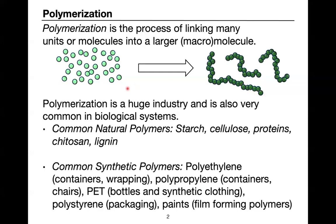We take lots of small units and link them together to make a smaller number of substantially larger, higher molecular weight molecules. That's polymerization — taking small units and linking them together to form macromolecules. It's a very large industrial process; in everyday life we're constantly using both synthetic and naturally occurring polymers.